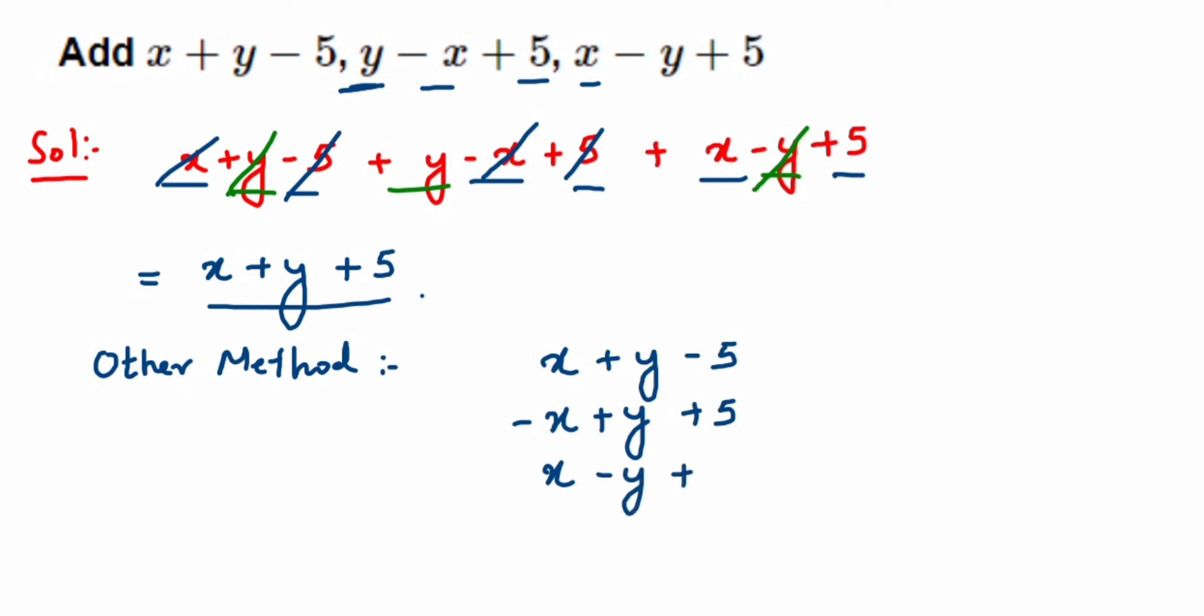For the x terms: x minus x is zero, and zero plus x equals x. So the first term is x.